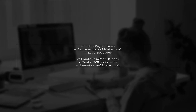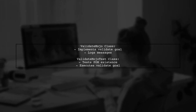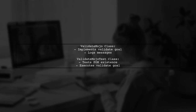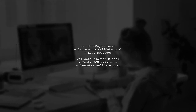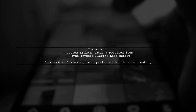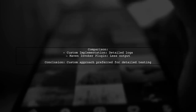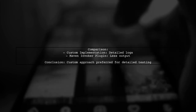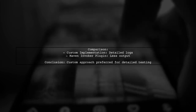The ValidateMojo test class tests the plugin's functionality, ensuring the POM file exists and executing the validate goal. The user notes that while the Maven Invoker plugin could also be used, it provides less detailed output compared to their custom implementation, which logs more information during test execution.